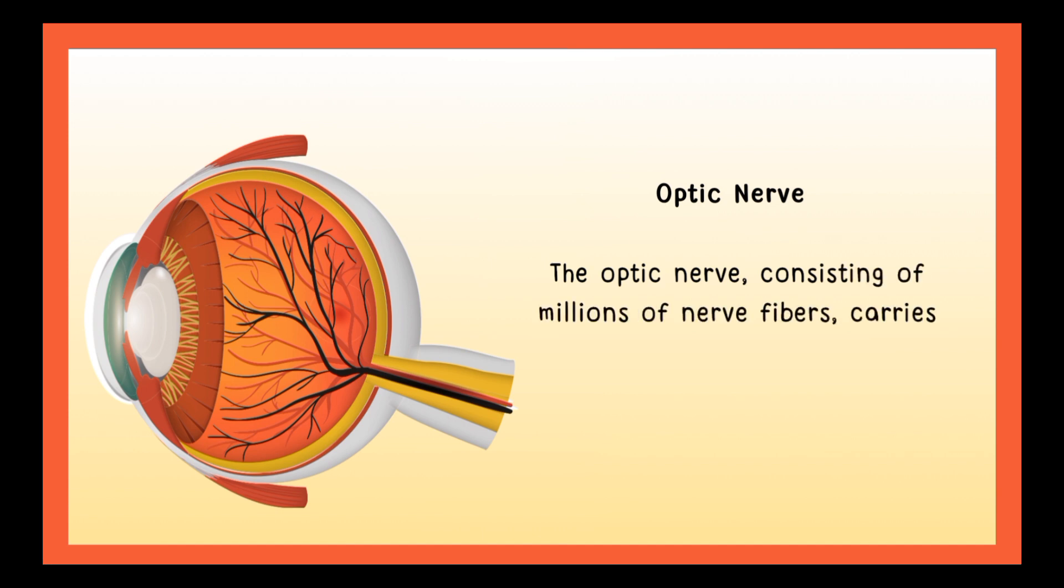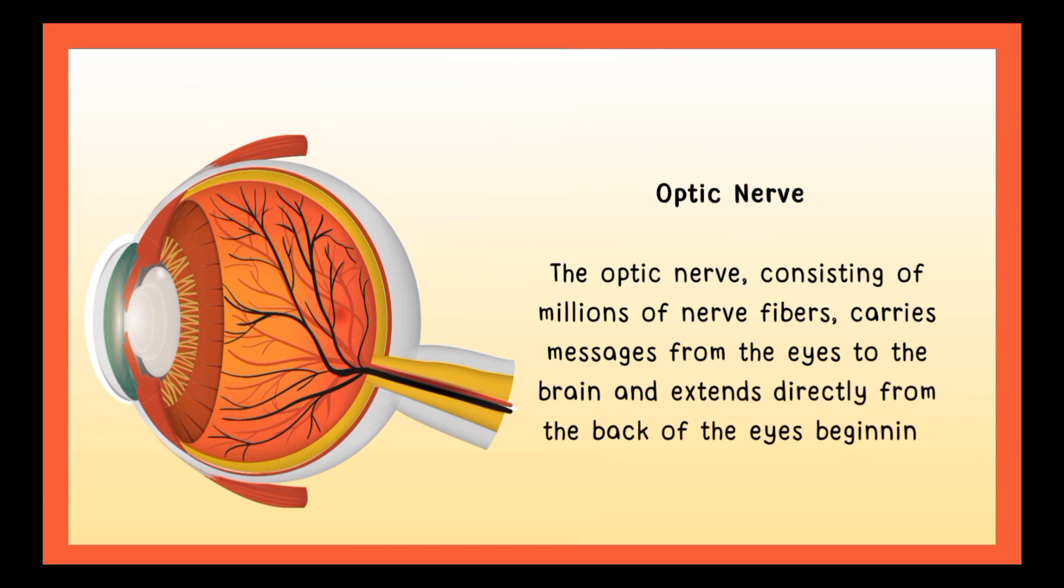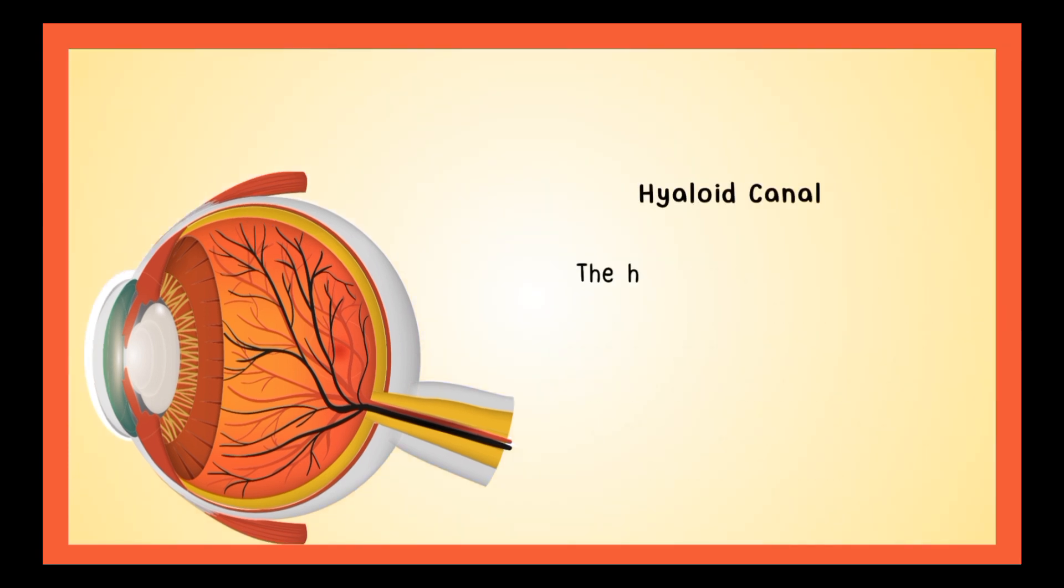The optic nerve, consisting of millions of nerve fibers, carries messages from the eyes to the brain and extends directly from the back of the eye, beginning at the optic disc. The hyaloid canal has the hyaloid artery that supplies blood to the developing lens.